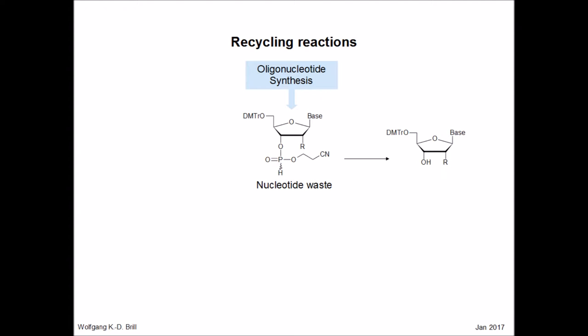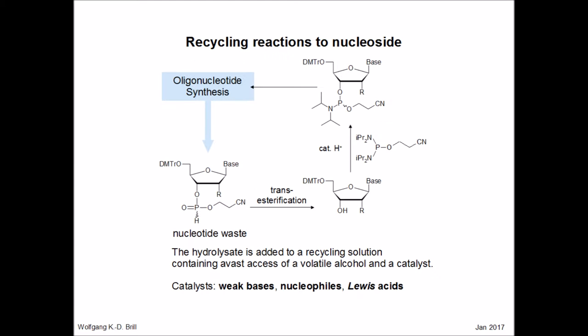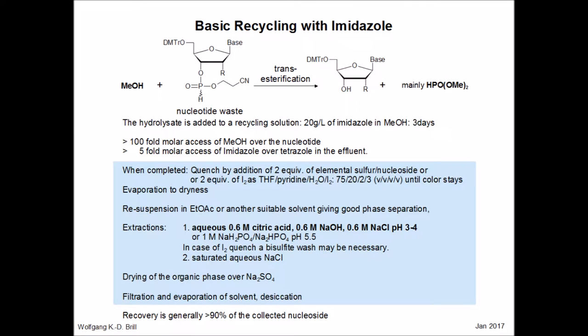At first, there is the dephosphonylation of the cyanoethyl hydrogen phosphonate to the nucleoside with a free 3'-hydroxy function. The latter could easily be converted to a phosphoramidite in high yields using known procedures. The phosphoramidite, in turn, is the starting material for oligonucleotide synthesis, concluding the recycling process. This recycling process is a transesterification whereby a hydrogen phosphonate is transferred from the nucleoside to a suitable acceptor alcohol, such as methanol.